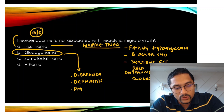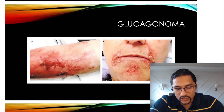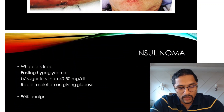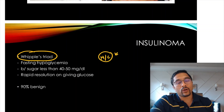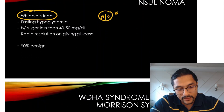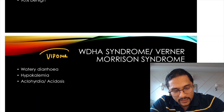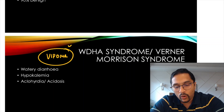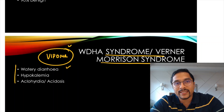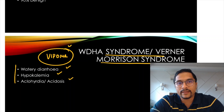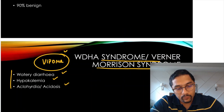Insulinoma is the most common pancreatic endocrine neoplasm and 90% are benign. VIPoma — vasoactive intestinal peptide tumor — gives rise to WDHA syndrome or Werner-Morrison syndrome: watery diarrhea, hypokalemia, achlorhydria, and acidosis. Insulinoma and glucagonoma have both been asked in the exam, while VIPoma has not been asked yet.